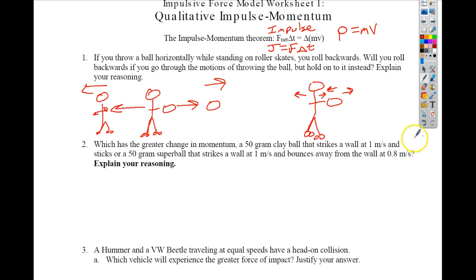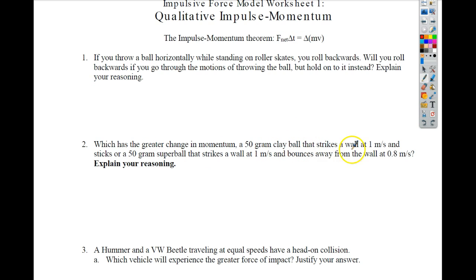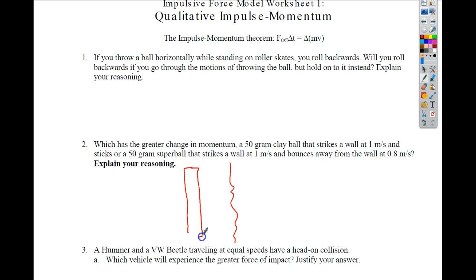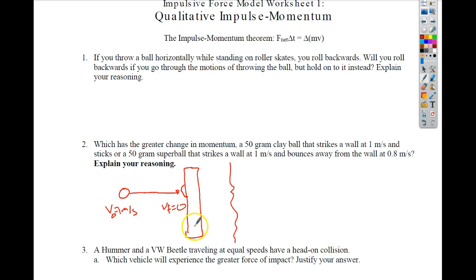The next question asks which has a greater change in momentum: a 50-gram clay ball that strikes a wall at 1 meter per second and sticks, or a 50-gram super ball that strikes a wall at 1 meter per second and bounces away at 0.8 meters per second. For the clay ball, its original velocity is 1 meter per second and its final velocity is 0 meters per second.